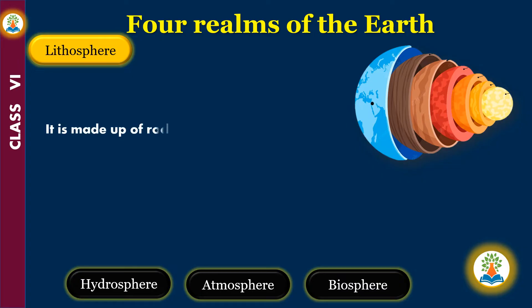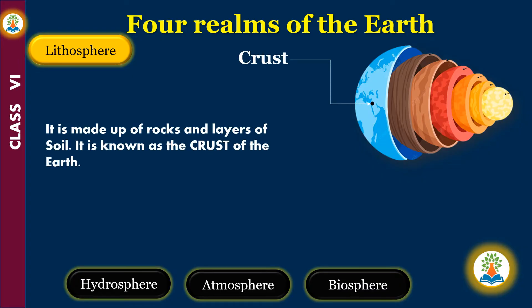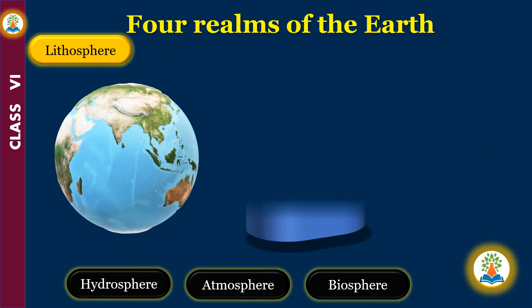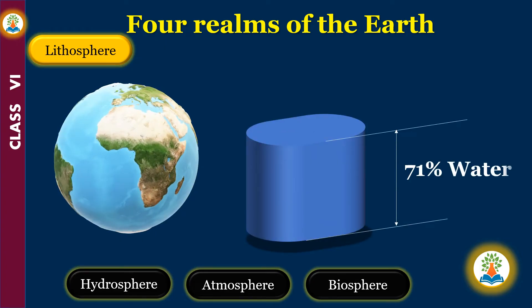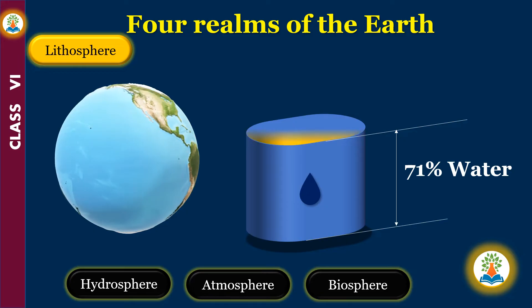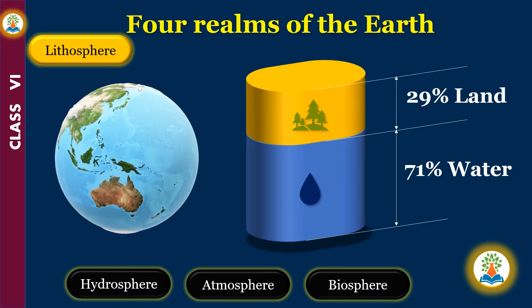The outermost solid layer of the earth is called the lithosphere. It is made up of rocks and layers of soil, and is known as the crust of the earth. About 71 percent of the total area of the lithosphere is covered with water, and the remaining 29 percent is occupied by land.